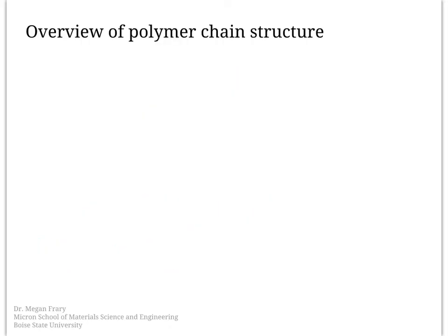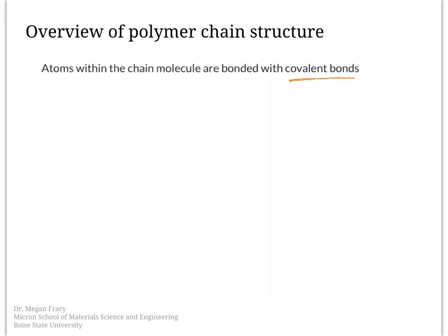Polymers are long-chain molecules, wherein the atoms within the chain are bonded together with covalent bonds. Covalent bonds are both very directional and very strong, and these play important roles in determining the properties of polymers. In between the chains, though, are different kinds of secondary bonds.